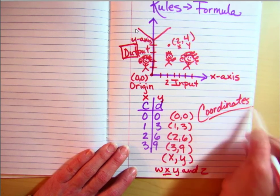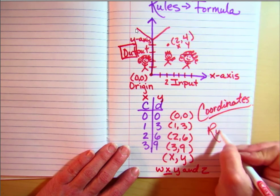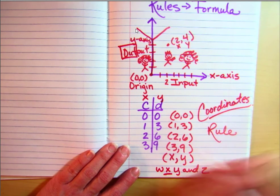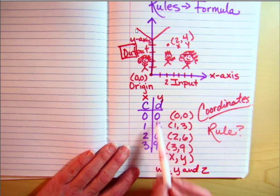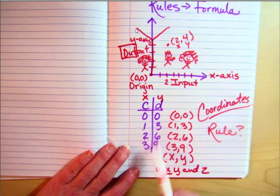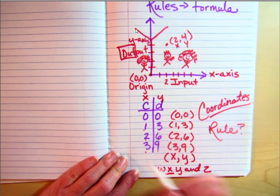Sometimes they're going to want the coordinate, sometimes they're going to want a graph, and sometimes they're going to want you to write a rule for your graph. You're going to have to ask yourself: 0, 0, 1, 3, 2, 6, 3, 9. It's really simple to see that it's a multiplicative rule.